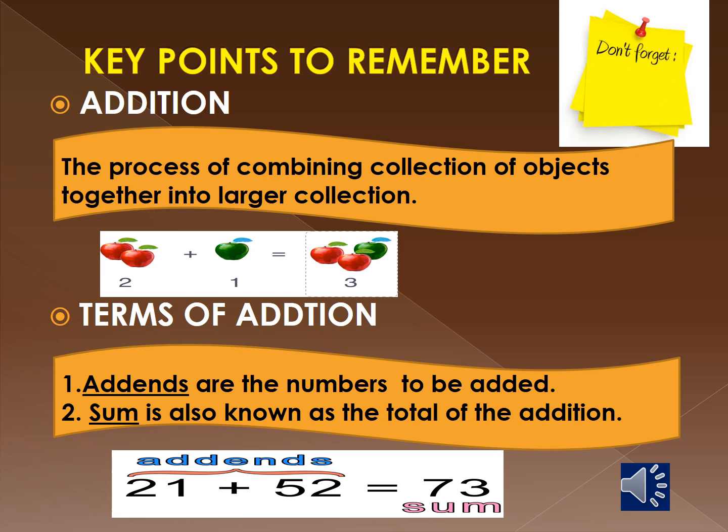Addition — what do you mean by addition? Addition is the process of combining collections of objects together into a larger collection. For example, here we have two red apples; when combined with one green apple, you have a collection of apples. So 2 plus 1 is equal to 3 — that is called addition.